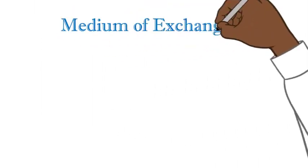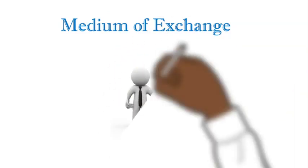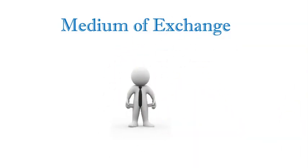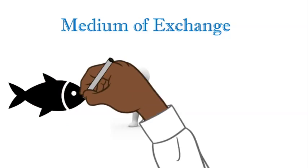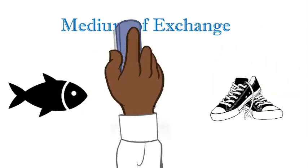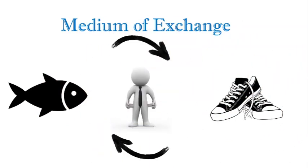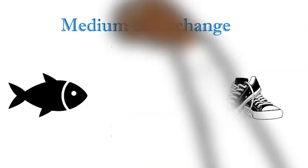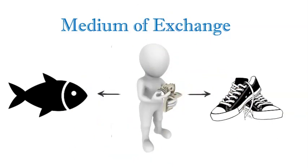First, money acts as a medium of exchange. Imagine a world without money, where people had to rely on bartering — the exchanging of goods or services directly. You and I would agree it would be very difficult to do. Money eliminates this difficulty by providing a universally accepted means of payment. It allows individuals to trade goods and services without the need for direct bartering.